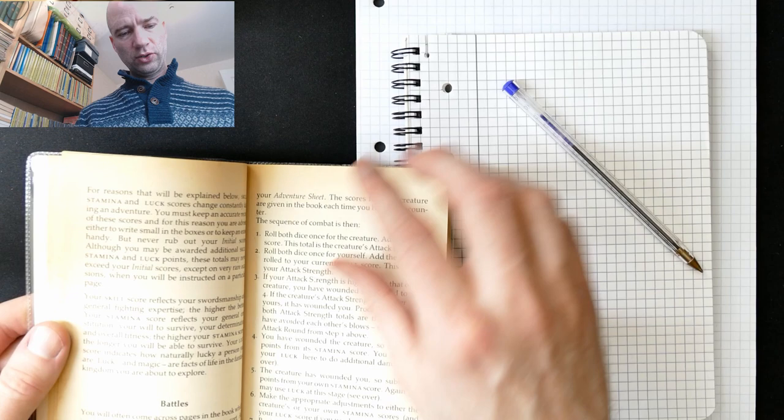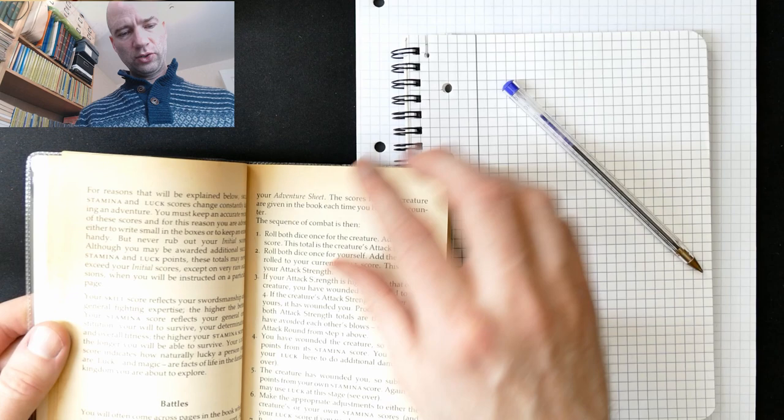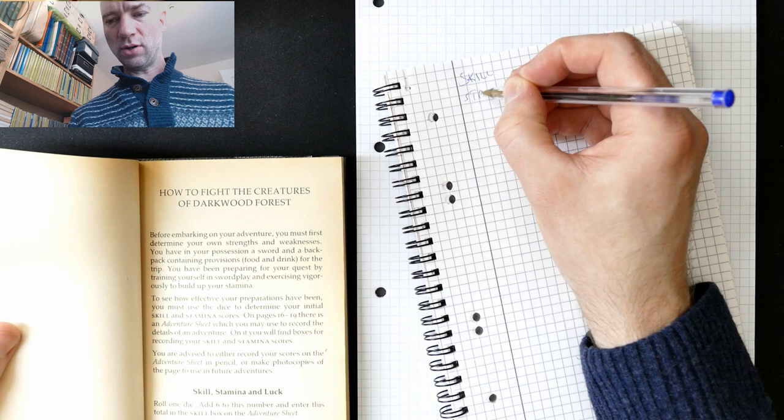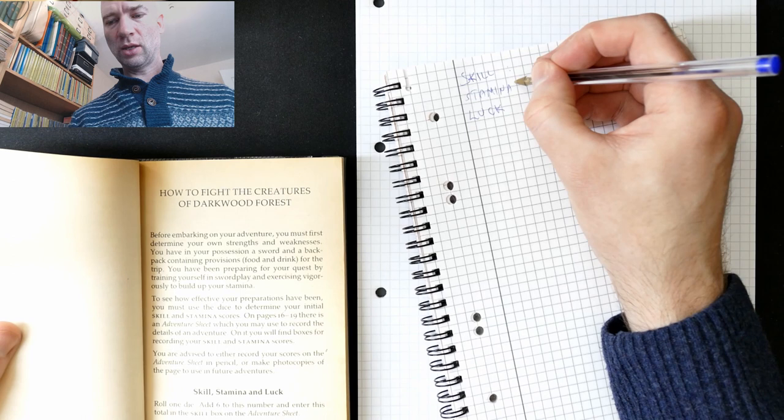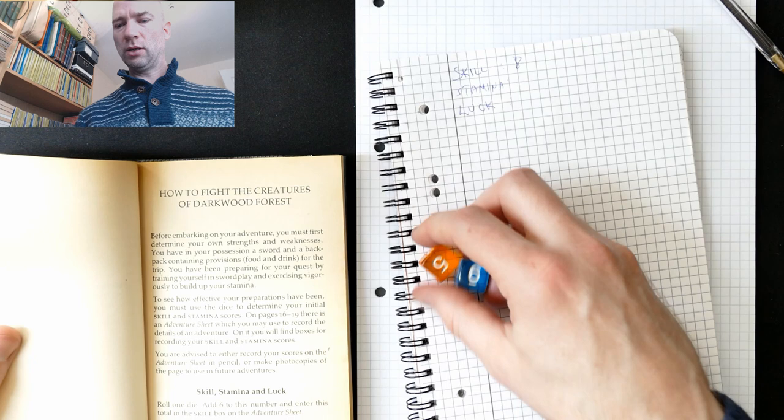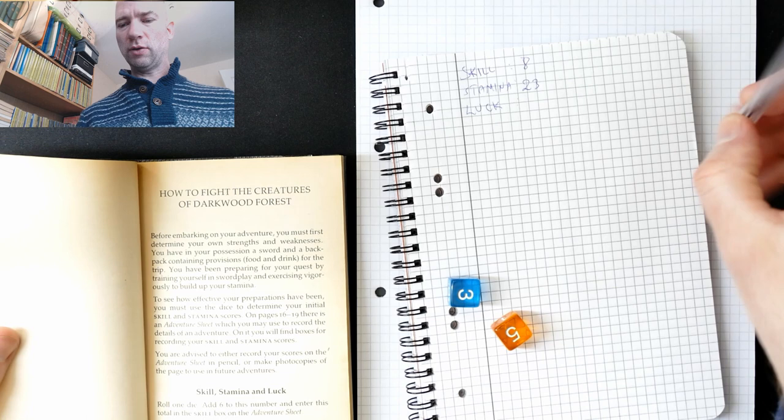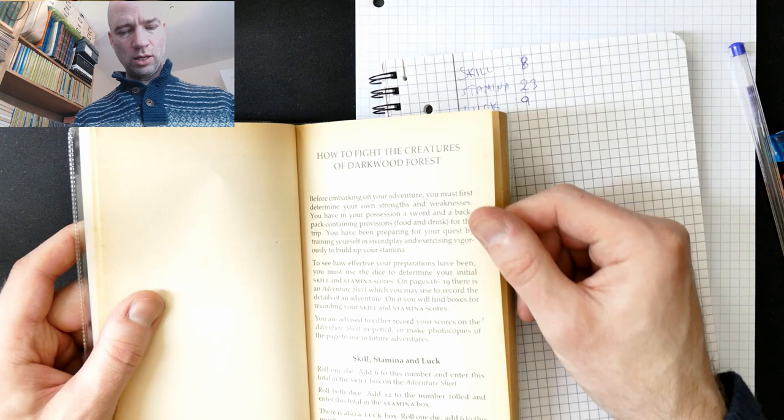Right. Let's see. So, we've got Skill, Stamina, and Luck. Back to basics after the magic system of fighting fantasy book number two. Skill, Stamina, Luck. And I'll roll for those today. Starting with skill. So, that's at eight. Stamina, 23. I'll need that with a skill of eight. And Luck, a very mediocre nine. Let's see how I get around with those.